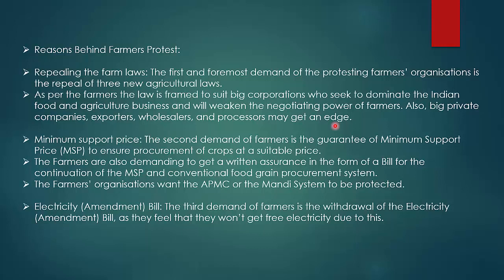MSP was the biggest point of protest. The second demand of farmers was a guarantee of minimum support price to ensure procurement of crops at a suitable price. Farmers were demanding a legal guarantee — a bill — for the continuation of MSP and the conventional food grain procurement system. Farmer organisations wanted the APMC or Mandi system to be protected.